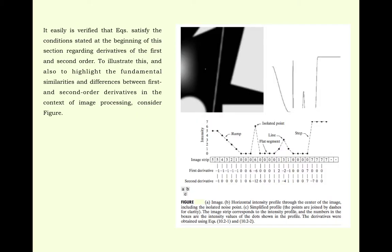It is verified from the previous equation that the conditions stated at the beginning regarding derivatives of the first and second order. Now by this picture it will be clear. In this picture a is the main image, intensity profile is shown in figure b, and in figure c a simplified profile showing how the pixel intensity changes and corresponding intensity profile changes. In the first strip image, intensity is 5, 5, 4, 3, 2, 1, 0, 0, 6 and so on.